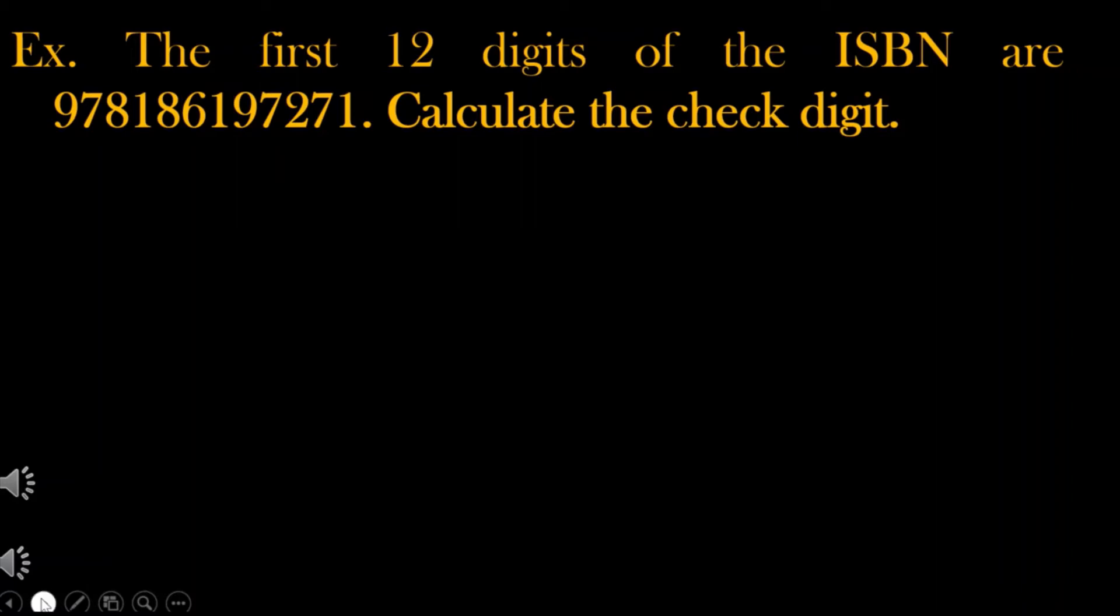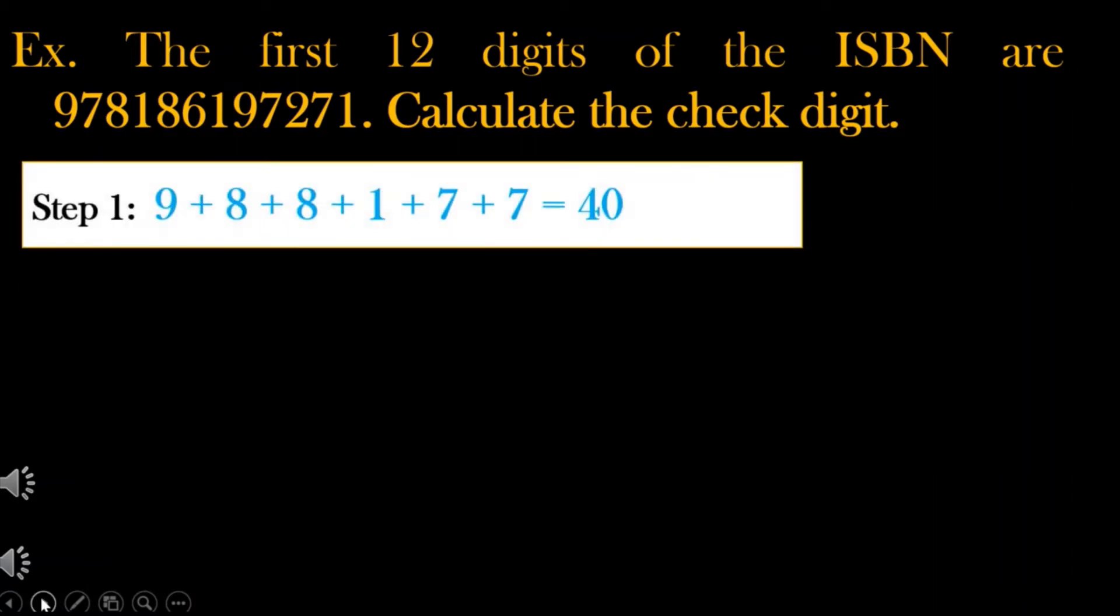Step 1: Add the odd number digit. The odd numbers from a given code are 9, 8, 8, 1, 7, and 7. Adding all these numbers together, we get the sum of 40.